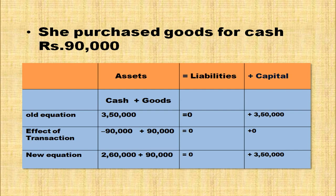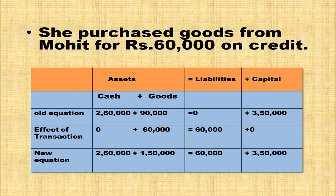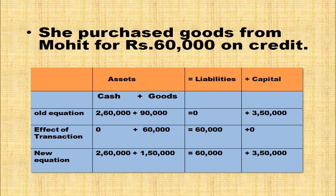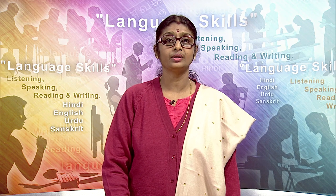Purchase goods from Mohit for rupees 60,000 on credit. Goods are coming inside the business, so in the goods column add 60,000. Creditors increased, so open a creditors column under liabilities and add 60,000. Accounting equation: cash 2,60,000 + goods (90,000 + 60,000 = 1,50,000) = 4,10,000 on asset side; liabilities 60,000 + capital 3,50,000 = 4,10,000. Accounting equation is satisfied.